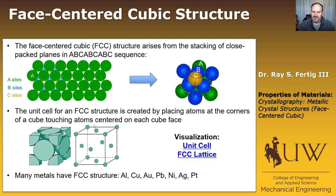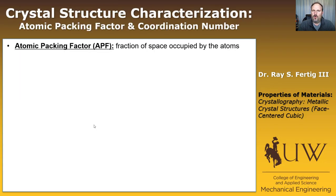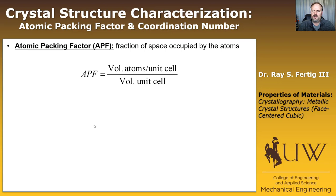Now we've defined this structure, so how do we characterize it and compare it to, say, a body-centered cubic or BCC structure? One characteristic is the atomic packing factor — all that is is the fraction of space occupied by the atoms. Similar to what we did in the 2D case, we're interested in how densely they're packed; here we normalize it and ask what percentage of the space is occupied by atoms. It's the volume of atoms in the unit cell divided by the total volume of the unit cell.